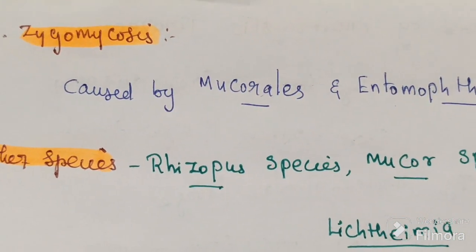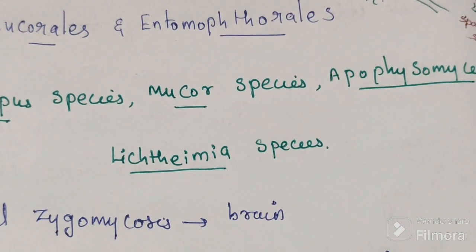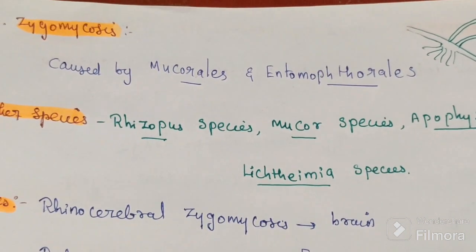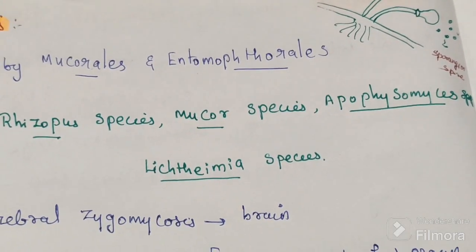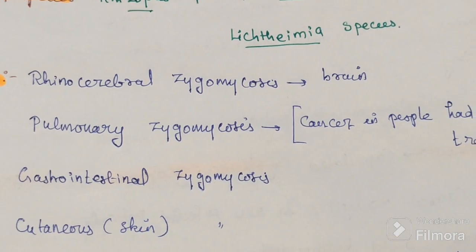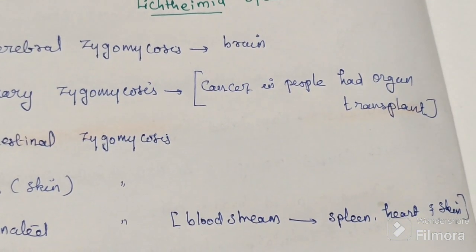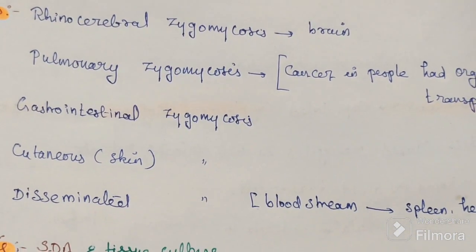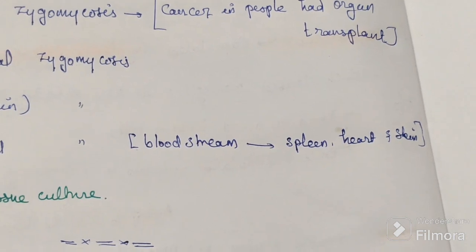The last fungus causes zygomycosis (mucormycosis), caused by four important species: Rhizopus species, Mucor species, Apophysomyces species, and Lichtheimia species. Types of zygomycosis include rhino-cerebral zygomycosis (mainly affecting the brain), pulmonary zygomycosis (associated with organ transplant patients), and gastrointestinal zygomycosis, which causes infection in the skin and disseminates through the bloodstream, affecting internal organs like the spleen, heart, and skin.